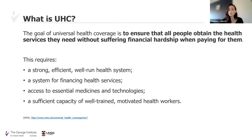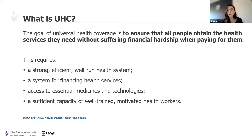The goal of UHC is really to ensure that all people everywhere can obtain the health services that they need without suffering financial hardship in doing so. We know that accessing health services is one of the primary determinants of people falling below the poverty line in a number of countries, both developing and more developed, such as the USA. The achievement of UHC requires four key components: a strong, efficient, and well-run health system; a system for financing health services; access to essential medicines and technologies; and a sufficient capacity of well-trained and motivated health workers.